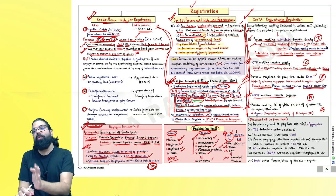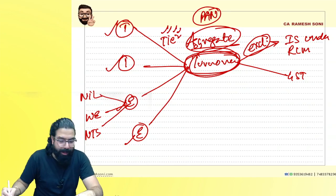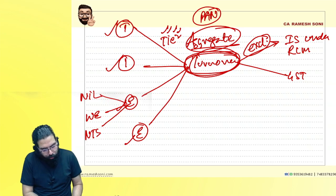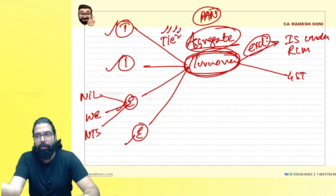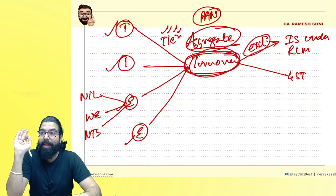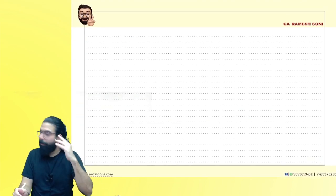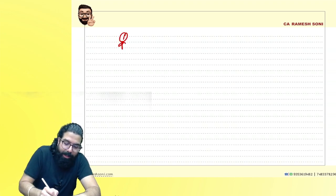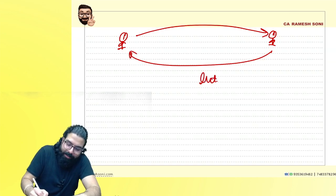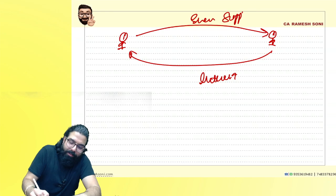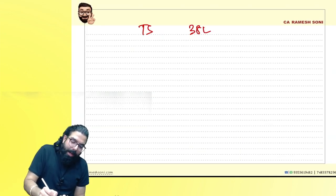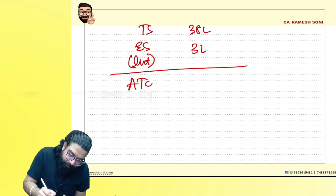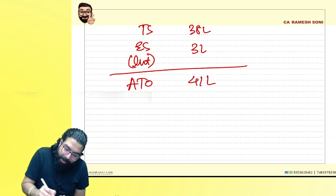One question will definitely come from sections 22, 23, and 24. Consider: if you give money to someone to use — that is a loan — and you earn interest, that interest is an exempt supply of service. When calculating aggregate turnover, if I have taxable supplies of ₹38 lakh and exempt supply (interest income) of ₹3 lakh, my aggregate turnover is ₹41 lakh — exempt supplies are included.